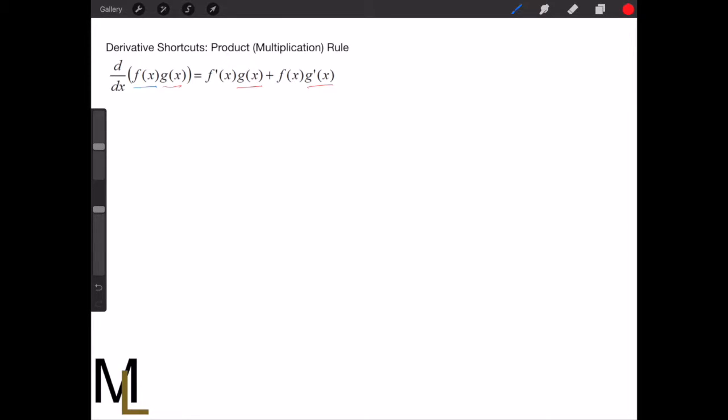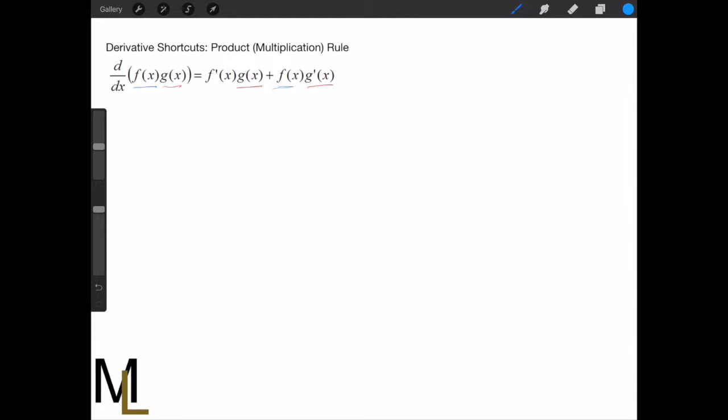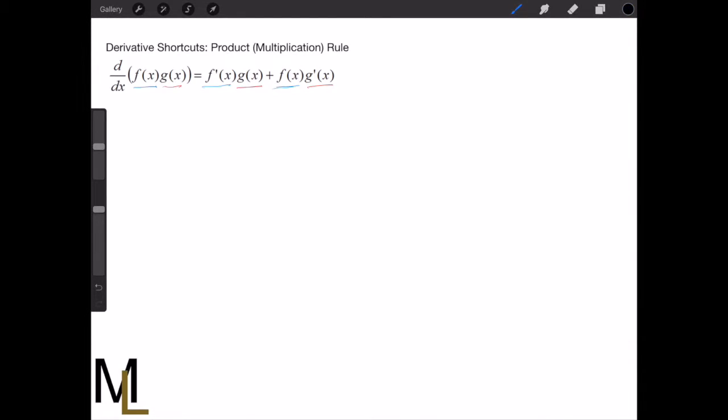And then you add the first times the derivative of the second. I think it does seem confusing at first, and the best way to show why this is true is to take an example. So to keep it simple, we'll use polynomials. Let's say we're trying to take the derivative of something like (x - 1) times (x² + 2x).